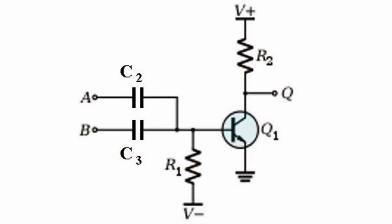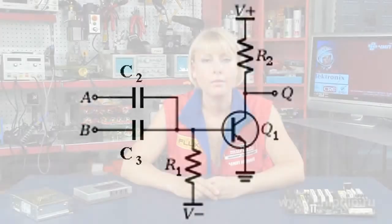An analog of RTL is the resistor-capacity transistor logic, abbreviated RCTL. This variant has condensers at the inputs, which allows through only impulses.